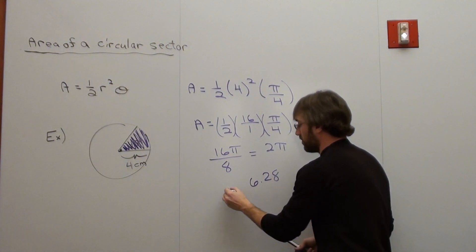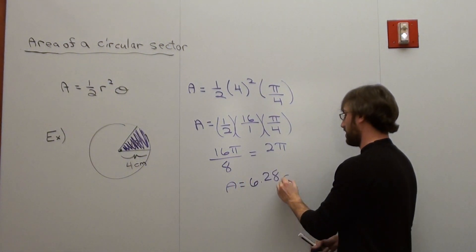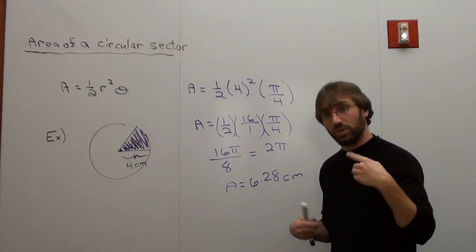So area equals 6.28 centimeters, and we're working with area so it's always squared.